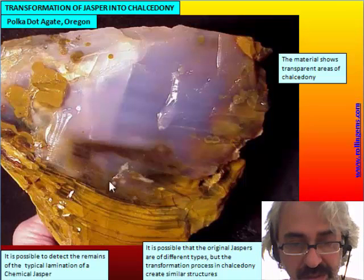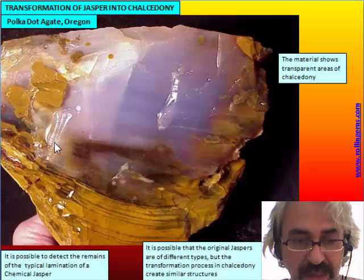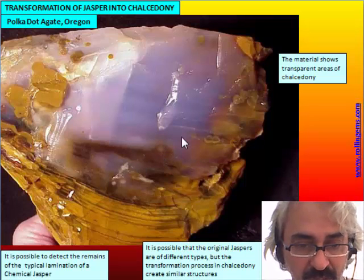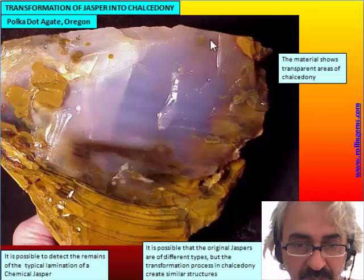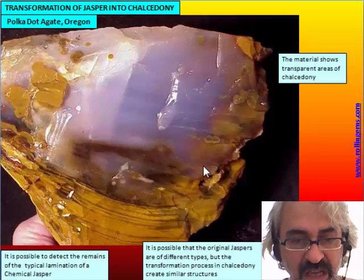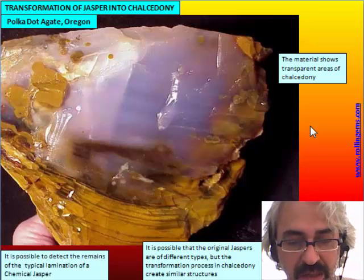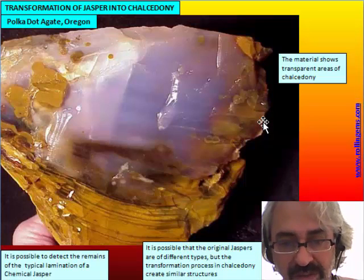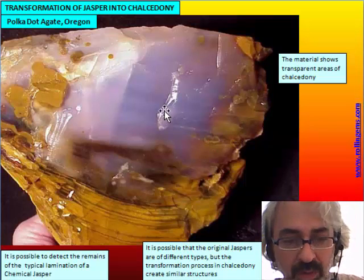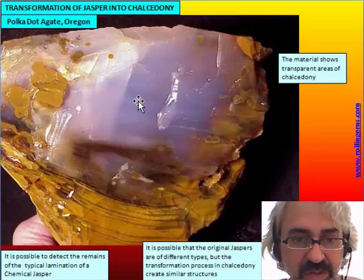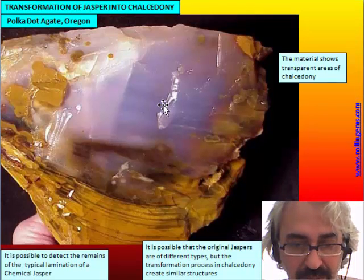These materials that are deposited as chemical Jasper become transformed into Chalcedony with the formation of dots. It is possible that the original Jasper of the Polka Dot deposit has two different origins: the sample seen before was possibly a stratified Jasper, while this one is more typically a chemical Jasper. But the process of alteration of the Jasper and its transformation into Chalcedony is the same in both materials.